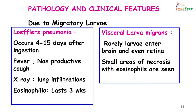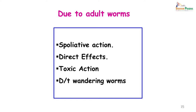Visceral larva migrans is a rare condition when the larva instead of going into the lungs decides to enter the brain and sometimes even the retina. When it goes to these places it is an end stage for the larva — it will cause small areas of necrosis with eosinophils at the site, but beyond that it does not mature. Due to the adult worm there can be various effects. With just a single worm you may be asymptomatic, but with more worms the most common features include spoliative action, direct effects, toxic action, and effects due to wandering worms.